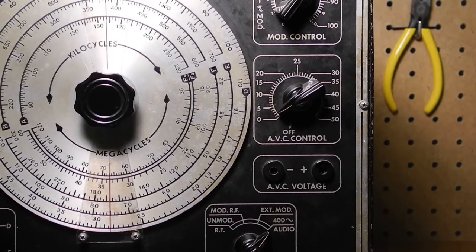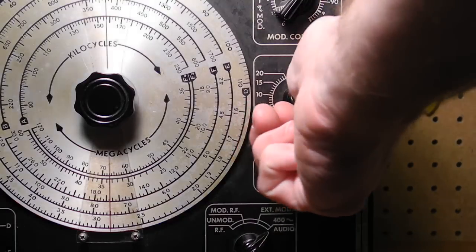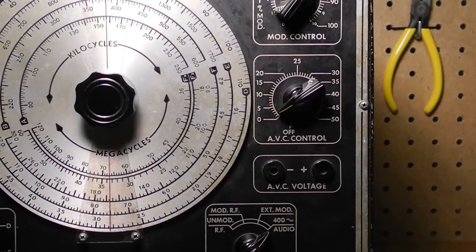Finally, the AVC voltage produces a negative voltage which varies with the AVC control. This is somewhat unique and the purpose is explained in the manual.